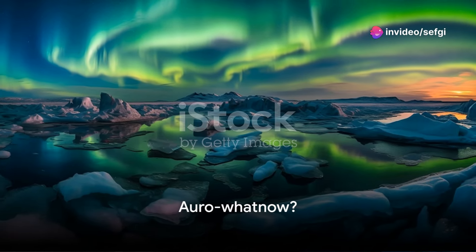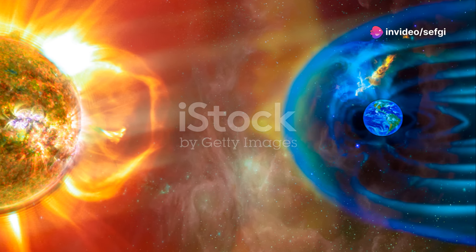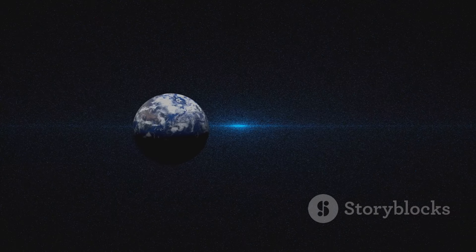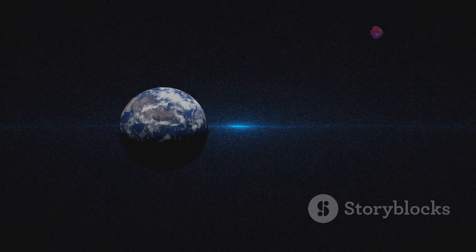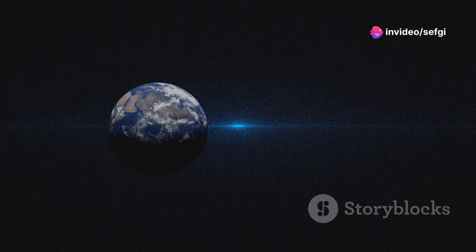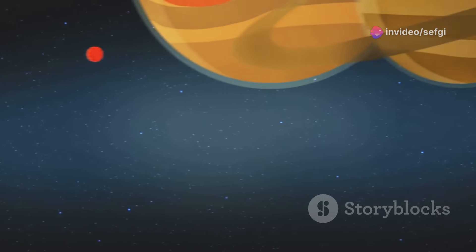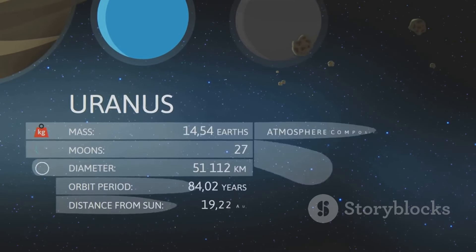Auroras, Earth's own light show. But we're not the only planet with this spectacle. Often called the northern or southern lights, these mesmerizing displays are caused by charged particles from the sun interacting with our planet's magnetic field. These particles traveling on solar wind collide with gas particles in our atmosphere. This collision results in a fantastic display of light, the auroras we know and love. But hold onto your hats because it's not an Earth-only party.